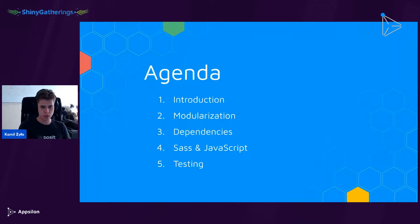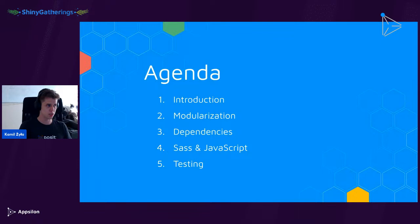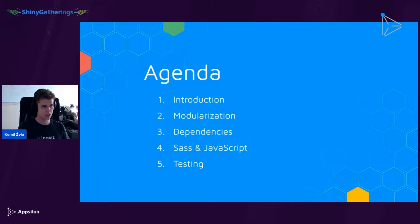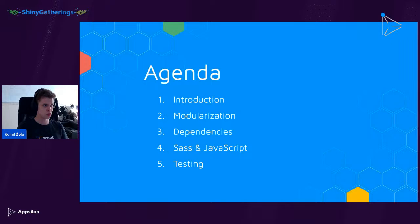The agenda for today covers five topics: first, a little introduction — what is Rhino, how do you install it, how do you initialize it. Then we'll talk about modularization — how Box modules and Shiny modules are utilized in Rhino. We'll talk about dependencies and what kind of setup Rhino uses, SASS and JavaScript development, and lastly testing — something absolutely crucial for long-term health of any software engineering project.